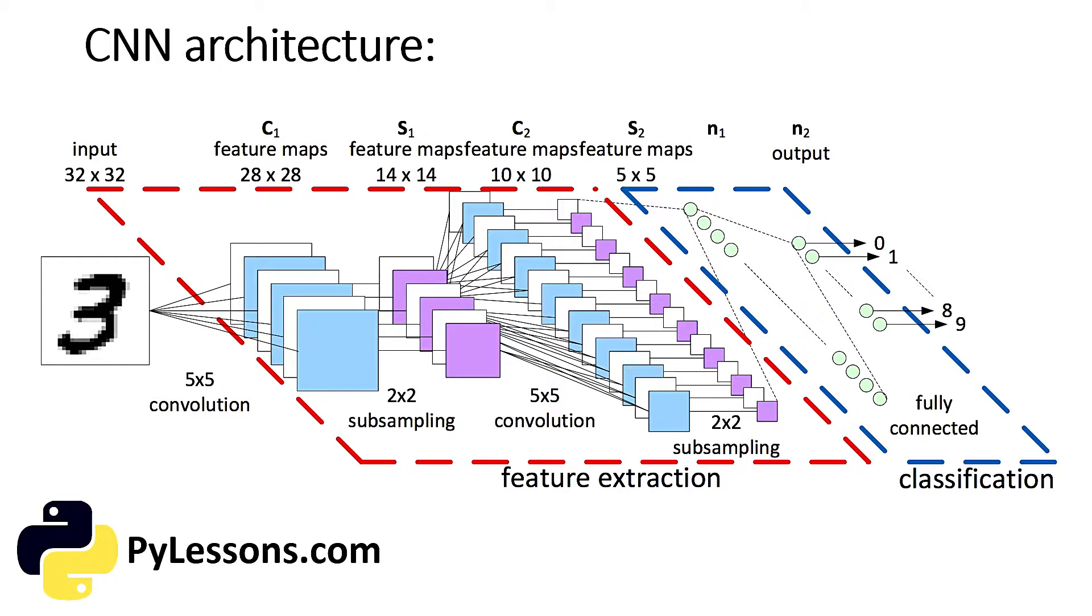For example, a handwritten digit image might have features like horizontal and vertical lines, loops, or curves, and many more. Later we'll see how to extract such features from our images.